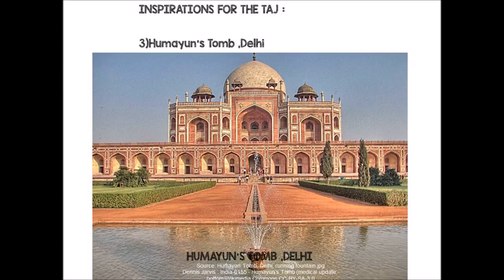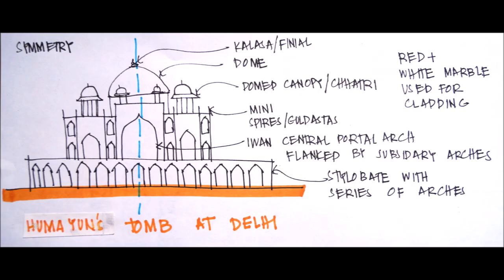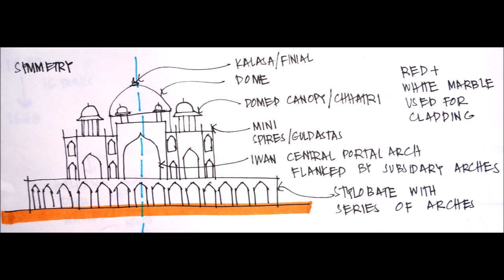The next major inspiration for the Taj is Humayun's tomb in Delhi, which forms a major inspiration and is the first garden tomb of India. It is elevated onto a plinth with a series of arches and features the central iwan. There is a drum, and onto the drum sits the onion dome topped by a finial. Humayun's tomb has a double dome, and the dome is flanked by dome chhatris on all four sides. It is a sandstone and marble building.